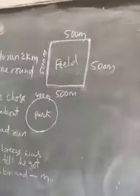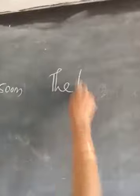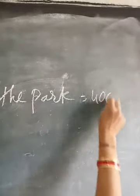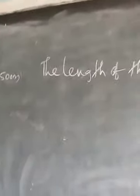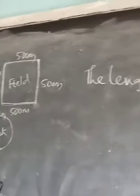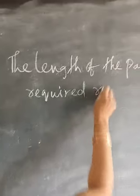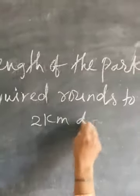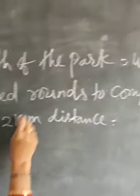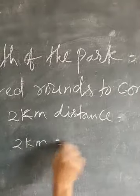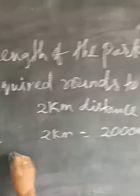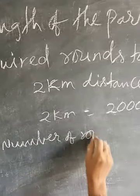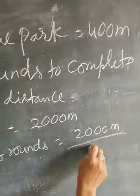Question number two — answer. The length of the park is 400 meters, which is one round. Required rounds to complete two kilometer distance: two kilometers means 2000 meters. So you have to divide. Number of rounds equals 2000 meters divided by 400 meters.